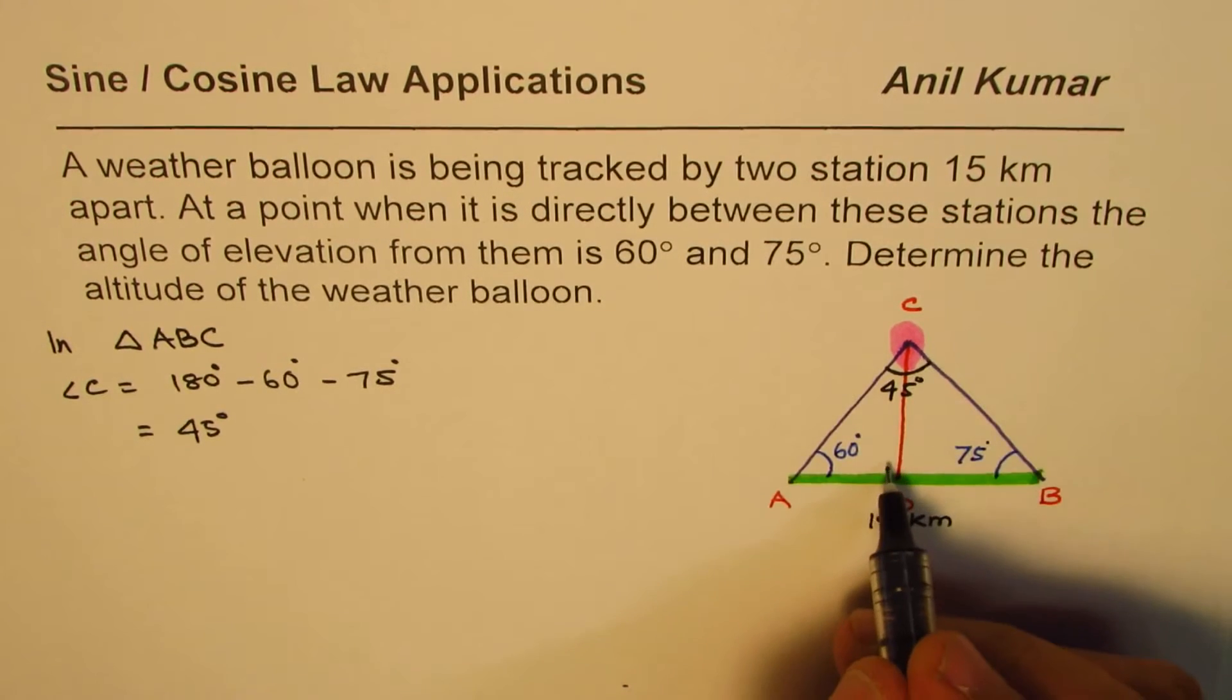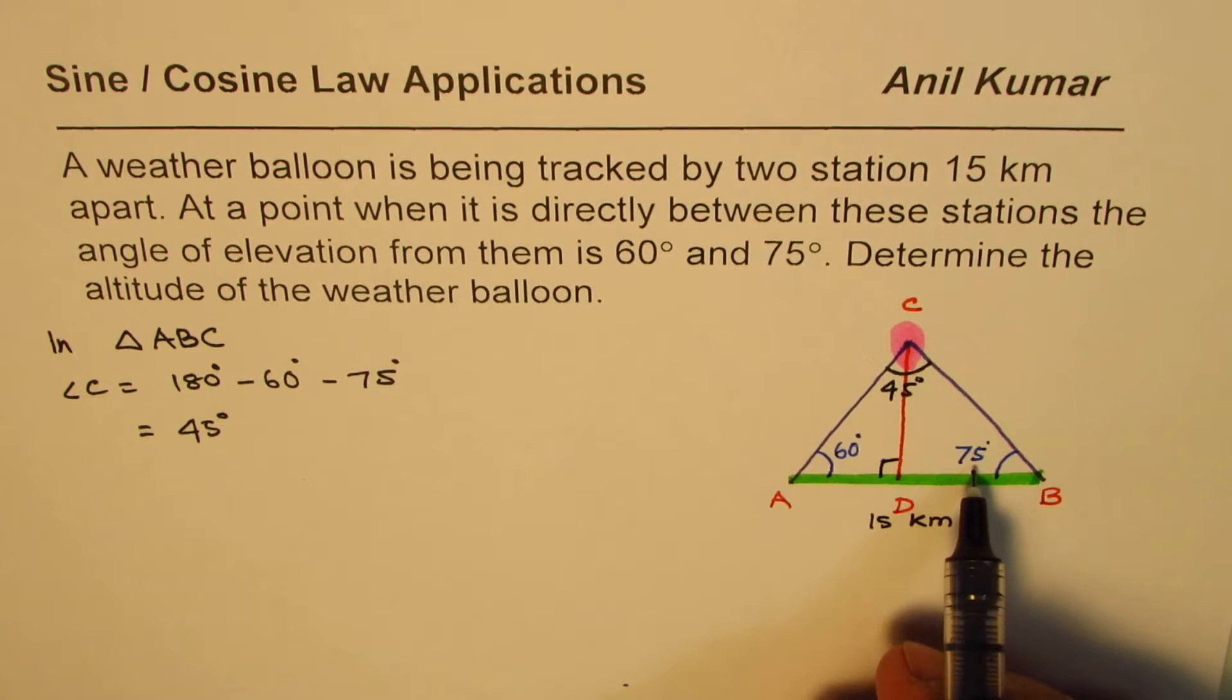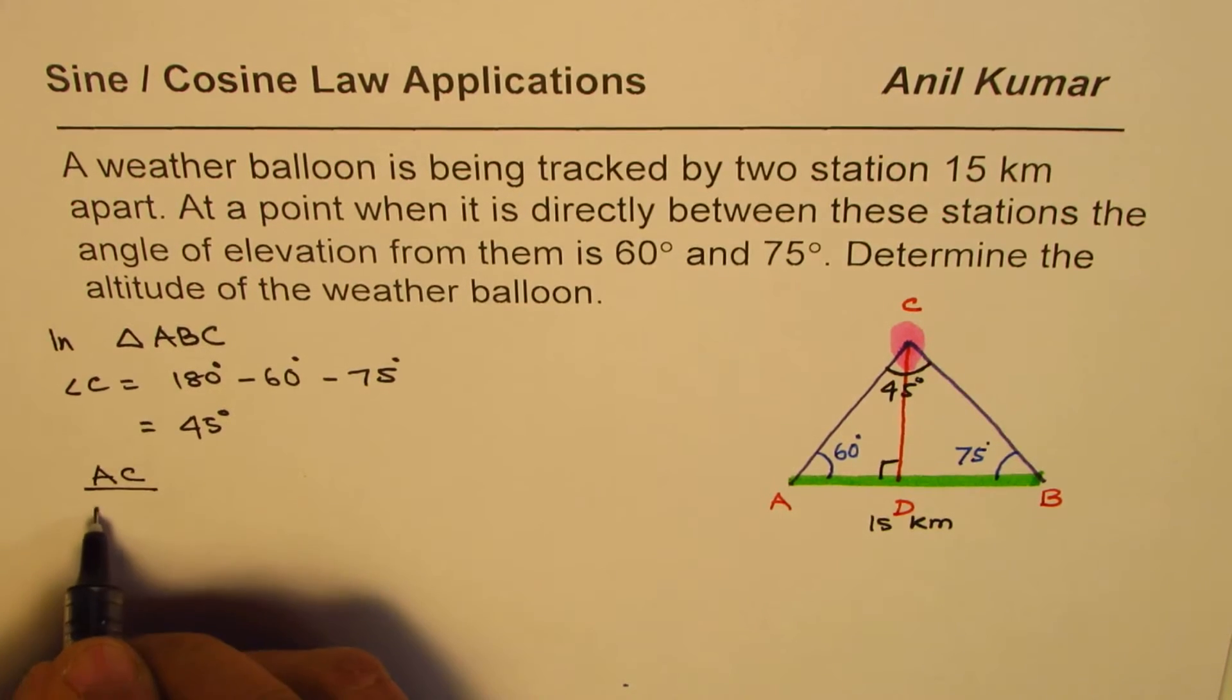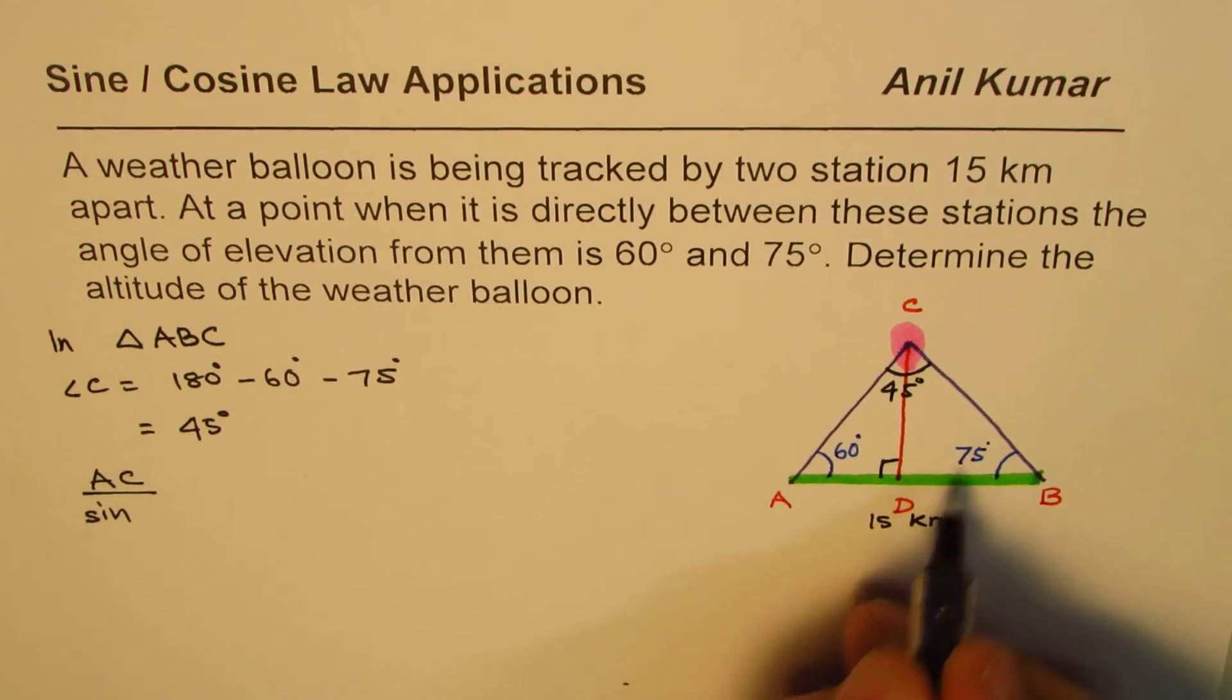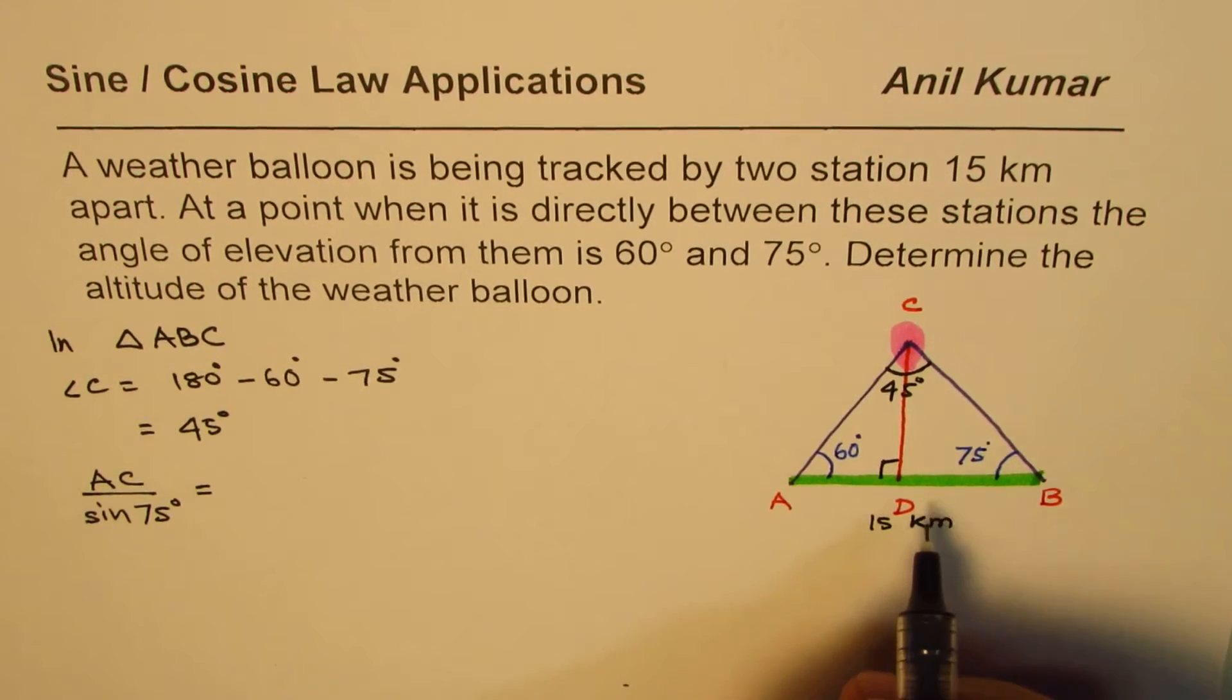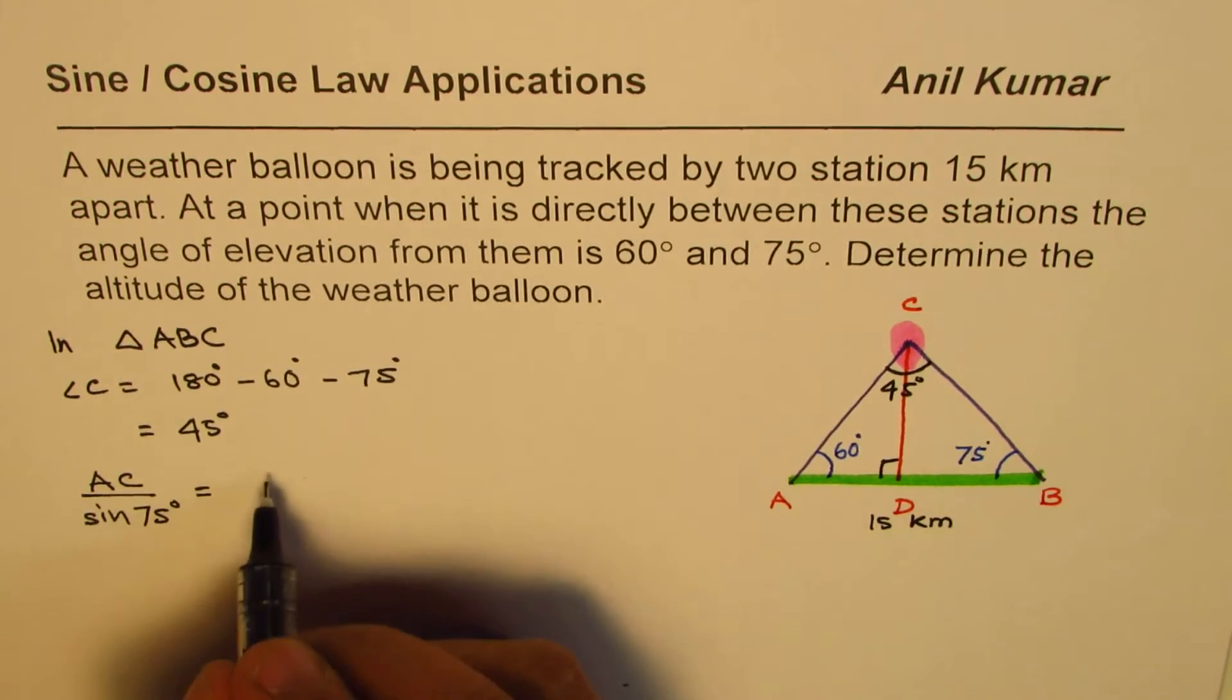This is actually a right triangle anyway, but we are talking in the triangle ABC. So AC is opposite to 75 degrees. We'll write AC over sine of 75 degrees is equal to what is known. Since we took AC the side length, we'll write the length known which is 15 kilometers.